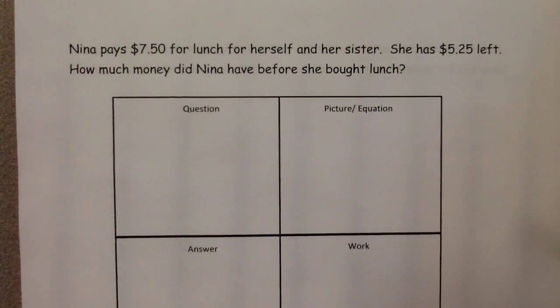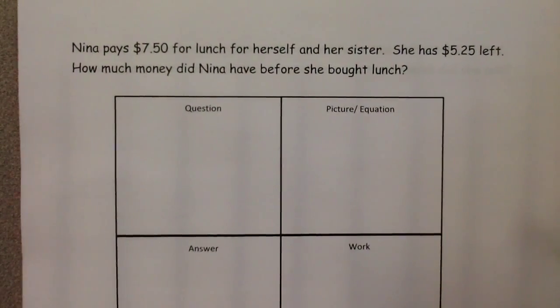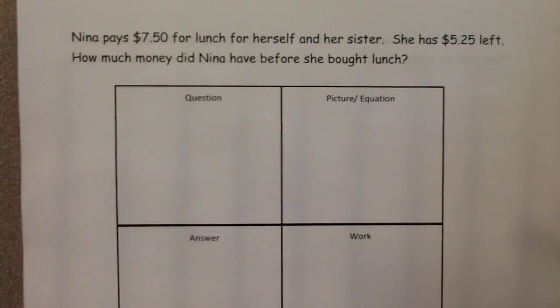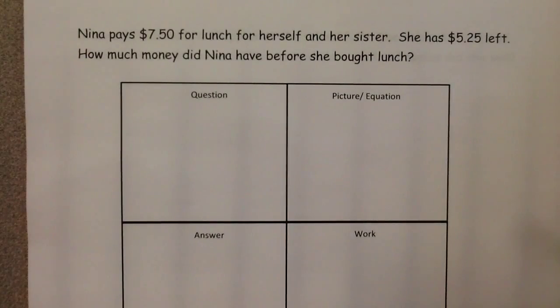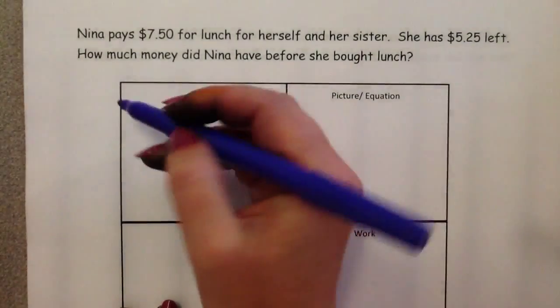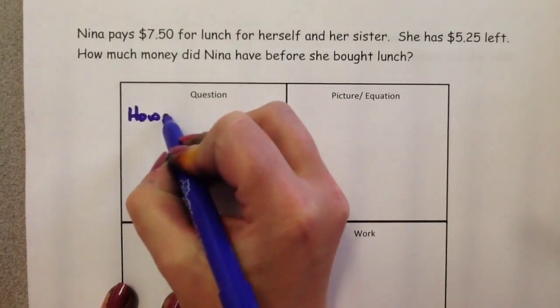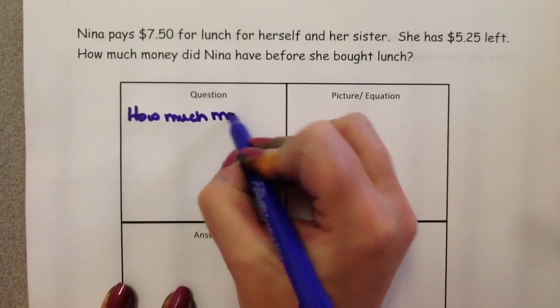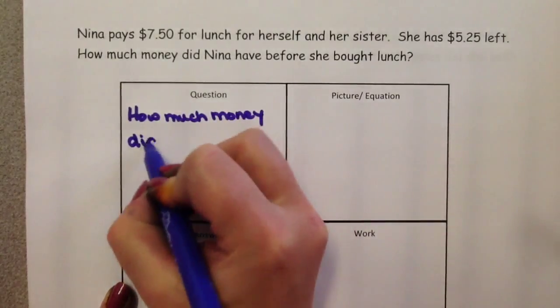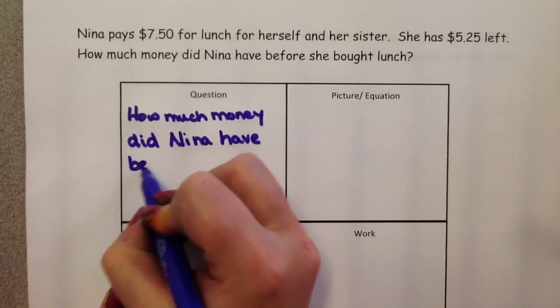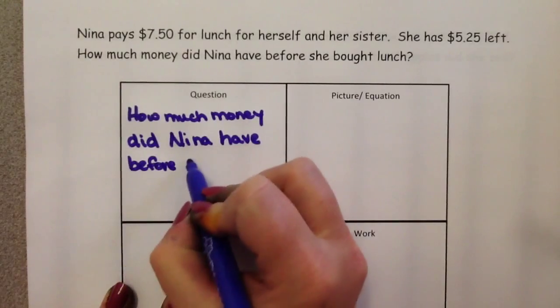Let's do an example. If you had a story problem that looked like this: Nina pays $7.50 for lunch for herself and her sister. She has $5.25 left. How much money did Nina have before she bought lunch? The question we write in the first box is: how much money did Nina have before she bought lunch?